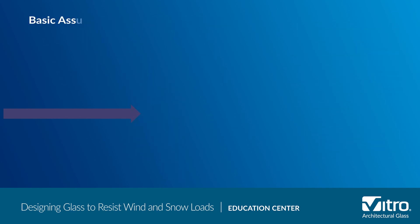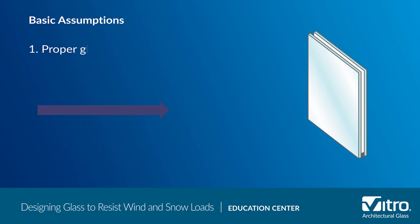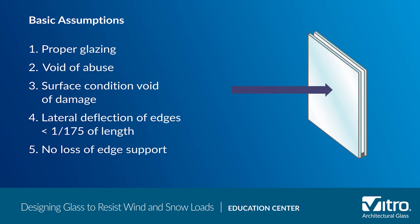These procedures operate under some basic assumptions related to glass fabrication and installation, including: the glass has been properly glazed without any edge damage; the glass hasn't been subjected to any abuse; the surface condition of the glass doesn't have any significant damage; the framing design limits the lateral deflection of the edges to less than 1/175th of their length; and the center of glass deflection will not result in loss of edge support.